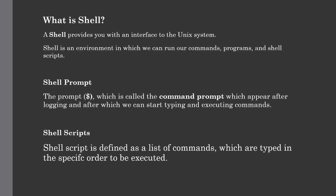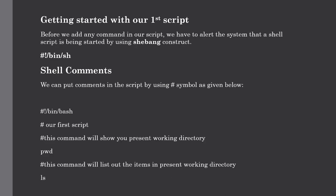We will now type and execute our first script. We will create a script named script1.sh — remember that all scripts have a .sh extension. Before adding any commands, we need to alert the system that a shell script is being started by giving the shebang construct, which intimates the system that a shell script is being executed. We can also put comments in the script using the hashtag symbol.